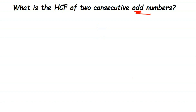We have to find out what will be the HCF of two consecutive odd numbers. This is applicable for any odd number. To find out, I'm going to take a random example. Let's take 11 and 13 — 11 is one odd number and 13 is the next odd number right after 11. I want to express them in prime factors.